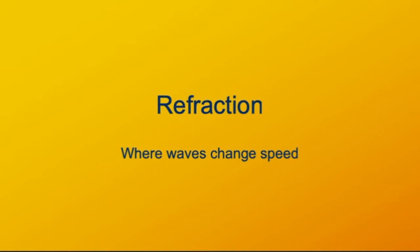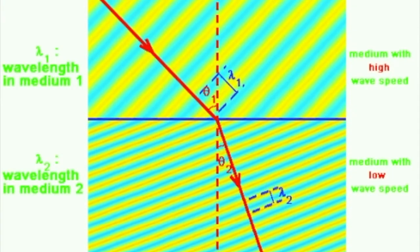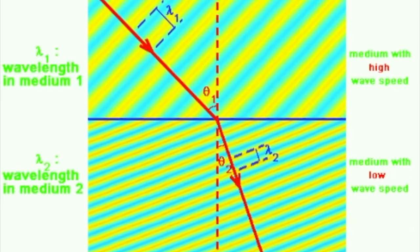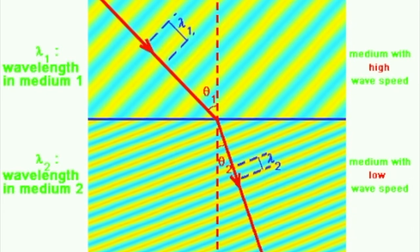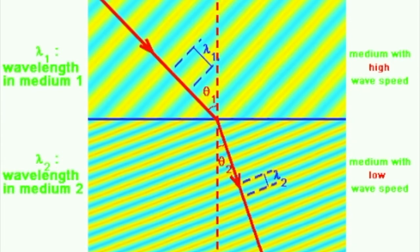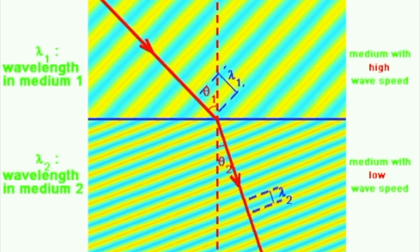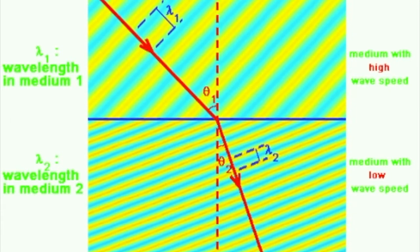If the speed of a two-dimensional wave changes, then we can get some very interesting results. Here we see a wave that's moving from a region where its speed is relatively high, that's the top part of the diagram, to a region where the speed is much slower, that's the bottom part of the diagram. The blue line shows the interface between the regions where the speed is high and the speed is low.